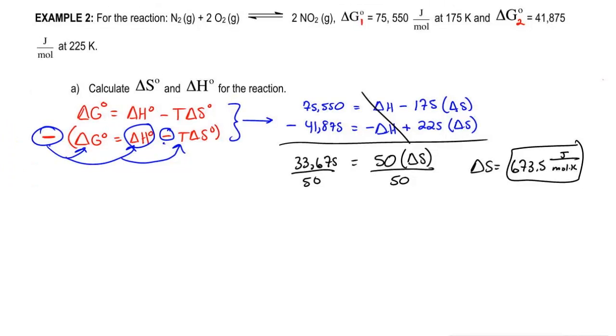If we want to find delta H, we simply now do delta G0 equals delta H0 minus T delta S0. We can choose either one of these delta G values, it doesn't really matter which one we choose, so we're going to say 75,550 equals delta H0, which we're looking for, minus 175 Kelvin times the 673.5 joules over moles times K we calculated from earlier.